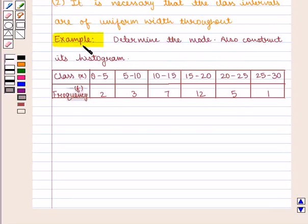Let us take an example. Determine the mode and also construct its histogram. The distribution is given as class intervals 0 to 5, 5 to 10, 10 to 15, 15 to 20, 20 to 25, 25 to 30, represented by X, with the corresponding frequency represented by F given by 2, 3, 7, 12, 5, and 1.